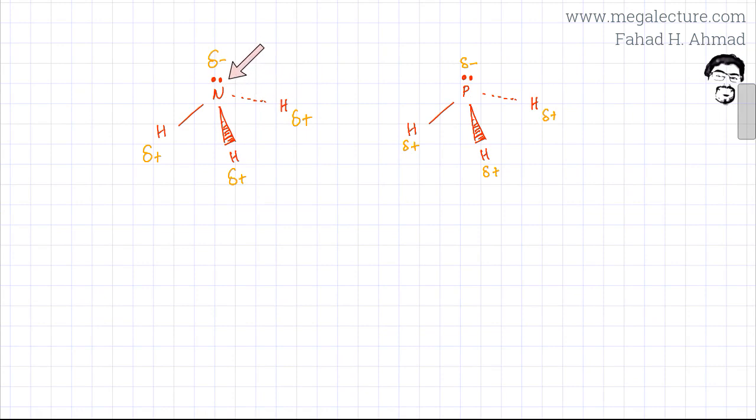Electrons are closer to nitrogen, so the negative charge that builds up on nitrogen is stronger, and the positive charge on hydrogen is stronger as well. In the case of phosphorus, which has lower electronegativity compared to nitrogen, electrons are dragged towards phosphorus more weakly.